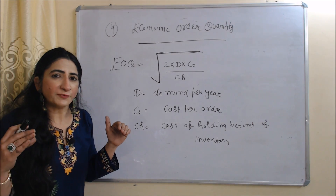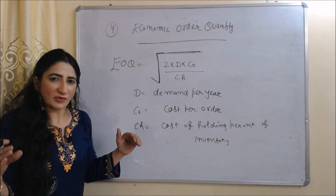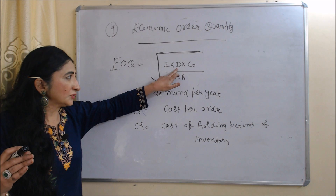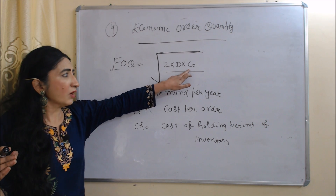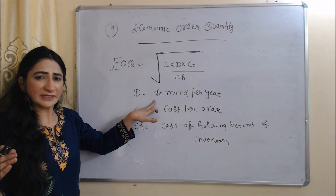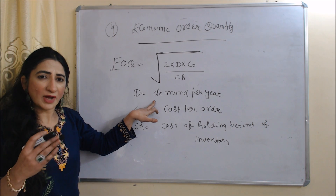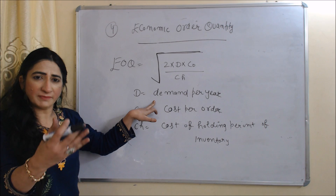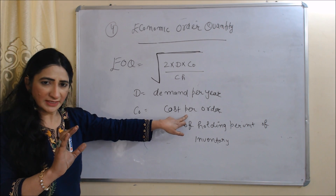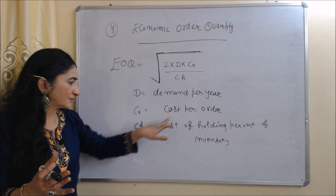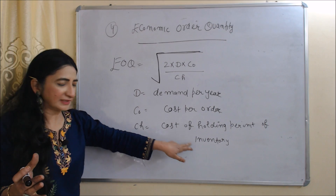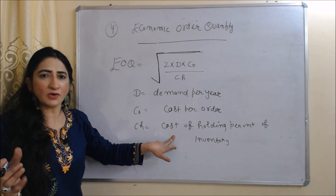Now we will see the formula for calculating economic order quantity: the square root of (2 × D × CO) divided by CH. Here, D is demand per year — how many quantities of your product consumers will buy. CO is cost per order, meaning your ordering cost. CH is cost of holding per unit of inventory, representing your inventory holding cost.